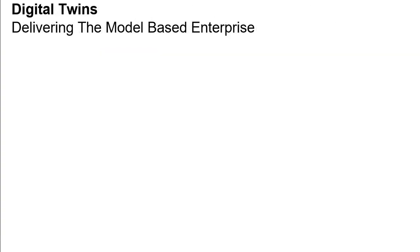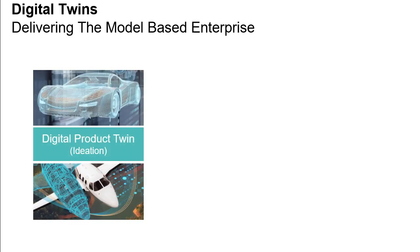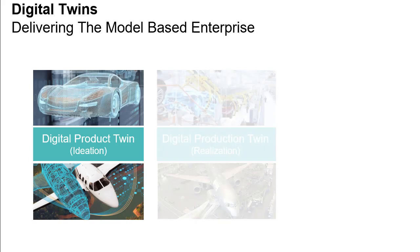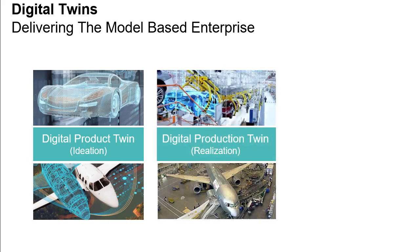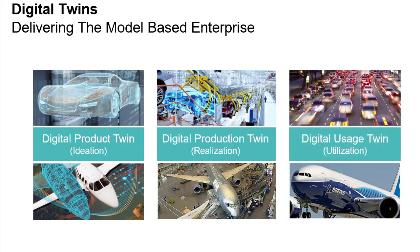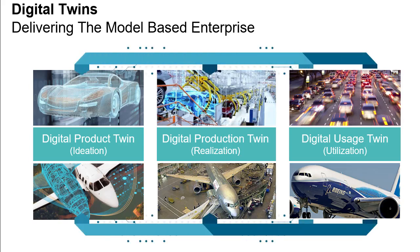If we think of the lifecycle of a product as three key phases, those would be ideation, in which the idea of the product comes into existence, followed by realization, in which the product is produced and becomes a thing in the real world, followed by utilization, in which that product lives the life and performs the role for which it was intended. Feedback of data captured during utilization can further improve future products and production methods.